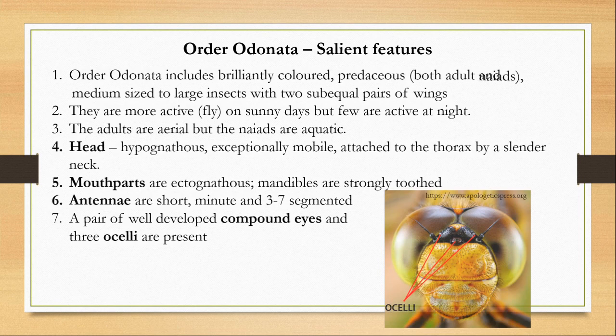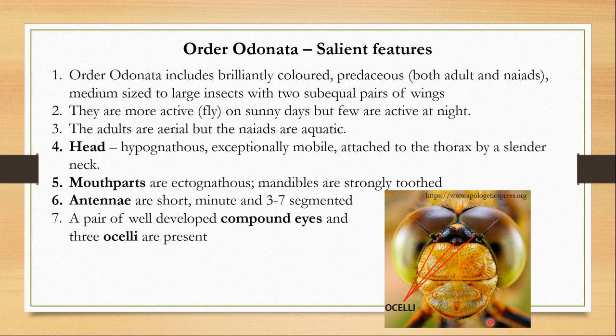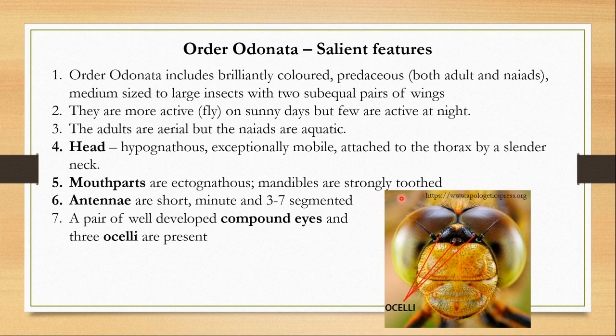Their head is hypognathous, meaning the mouthparts are arranged perpendicular to the rest of the body. The head is exceptionally mobile — they can move it in all directions — and it is attached to the thorax by a slender neck. The mouthparts are ectognathous, meaning the maxillae and mandibles are outside the head cavity.